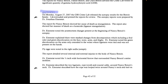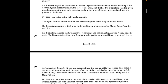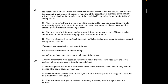The report detailed several internal and external injuries to Nancy Benoit's body. Dr. Eisenstadt noted a quarter-inch wide horizontal furrow that surrounded Nancy Benoit's entire neckline. He described the two ligatures — rope, cord, and coaxial cable around her neck. The rope was looped twice around Nancy's neck and tied on the backside, and the coaxial cable was looped once around the neck and intertwined with the rope. One end of the coaxial cable extended down the left side of Nancy's back, the other end down the right side.